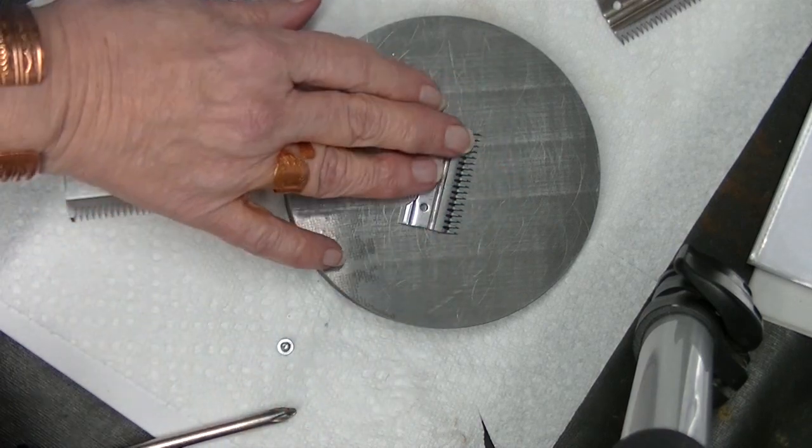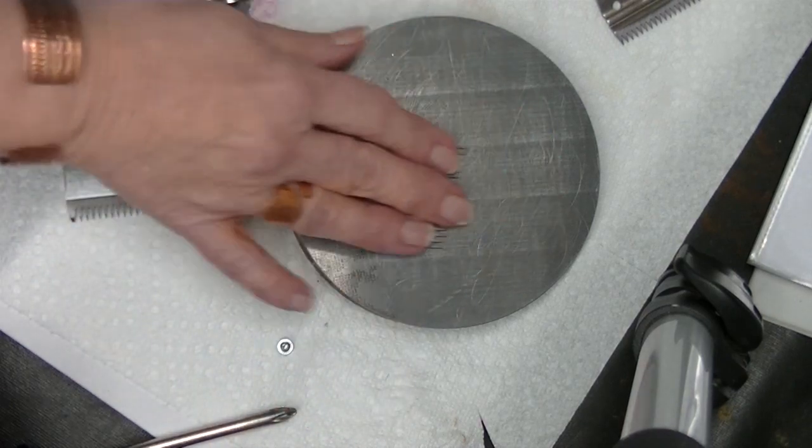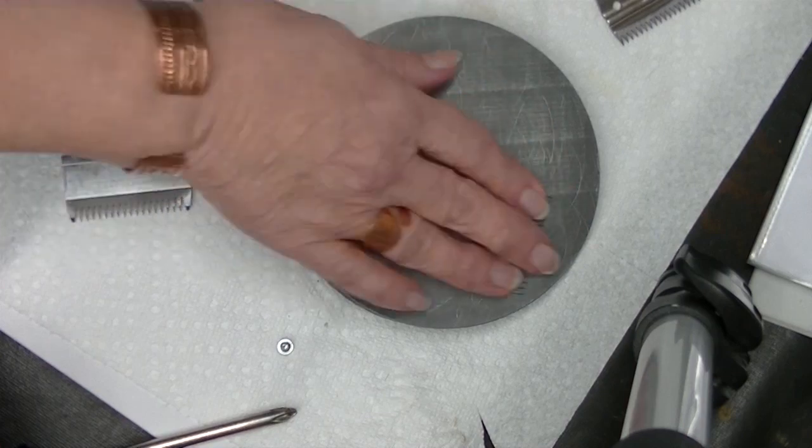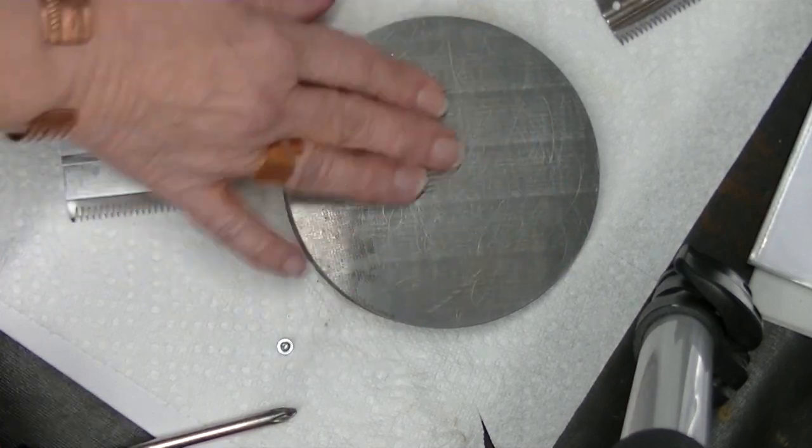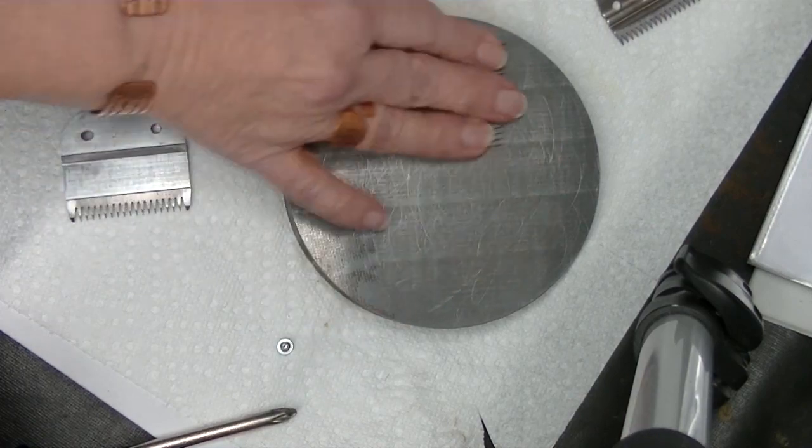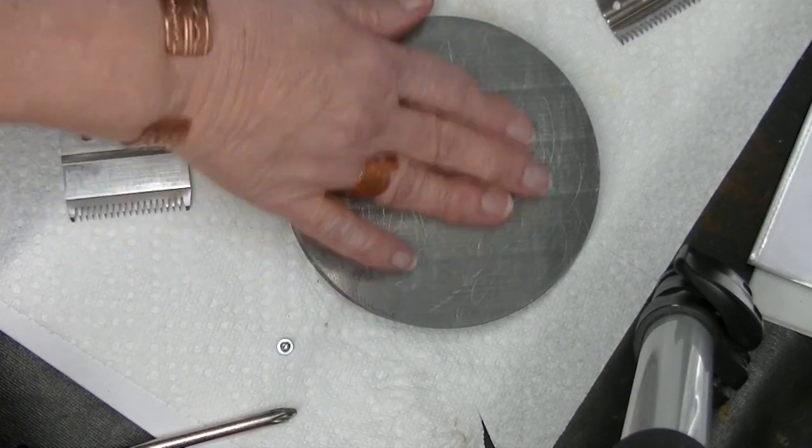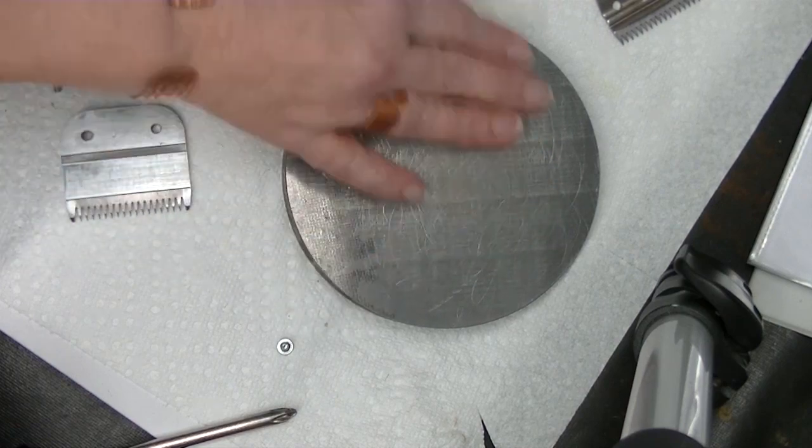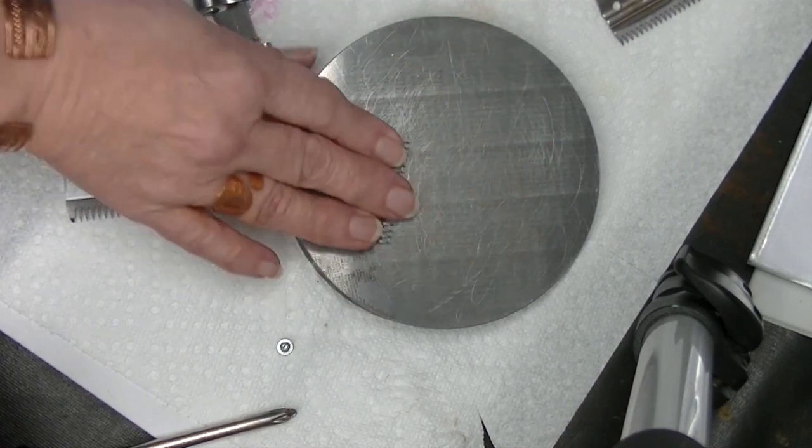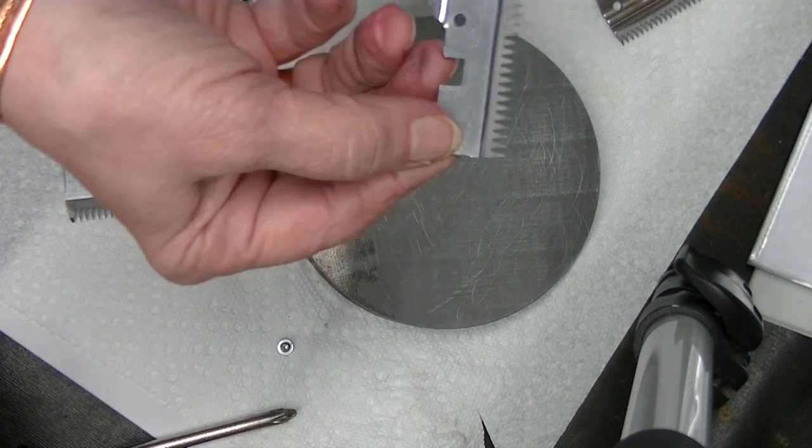Now, do I do every blade? No. A lot of people recommend every six blades or every 12 blades. I test all the blades if I can after I finish sharpening them. And if I see one that doesn't pass, then I'll do the rub block test, especially if I see a few in a row.